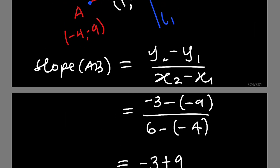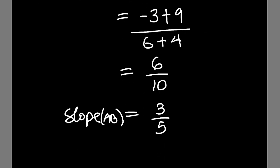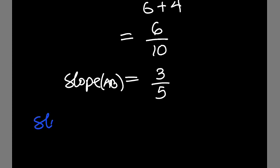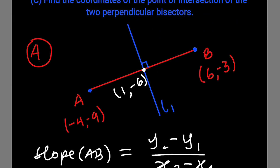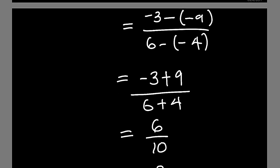So what about the slope of line L1? It is going to be the negative reciprocal of 3 over 5. The reciprocal of 3 over 5 is 5 over 3, and its negative is negative 5 divided by 3. This is the slope of L1. To find the equation of L1, you need its slope — which is negative 5 over 3 — and any point that lies on the line. The only point we have is the midpoint, which is (1, negative 6).